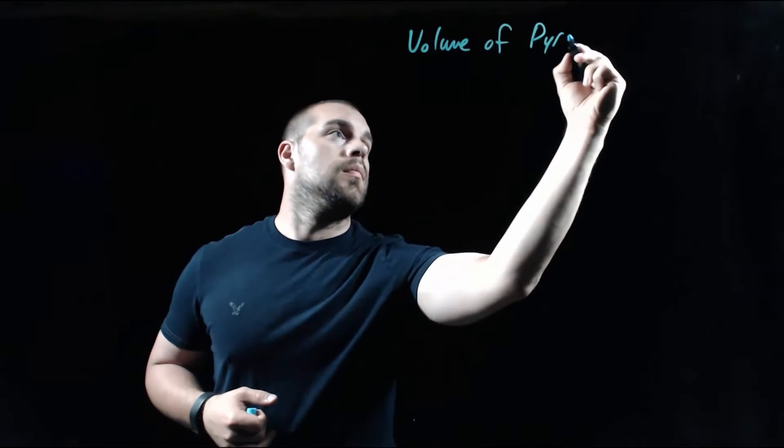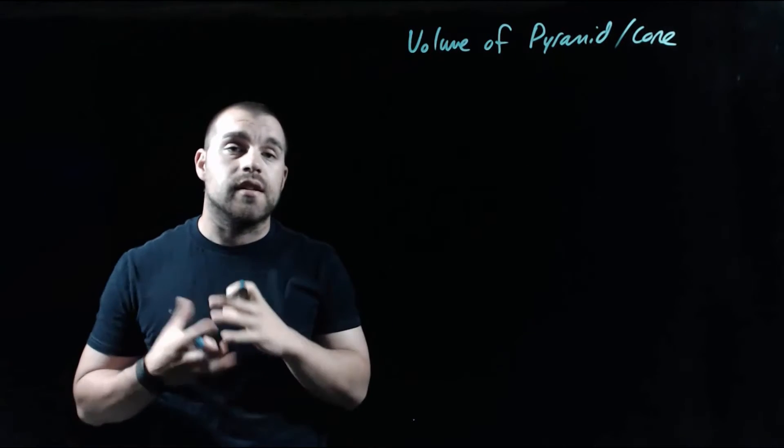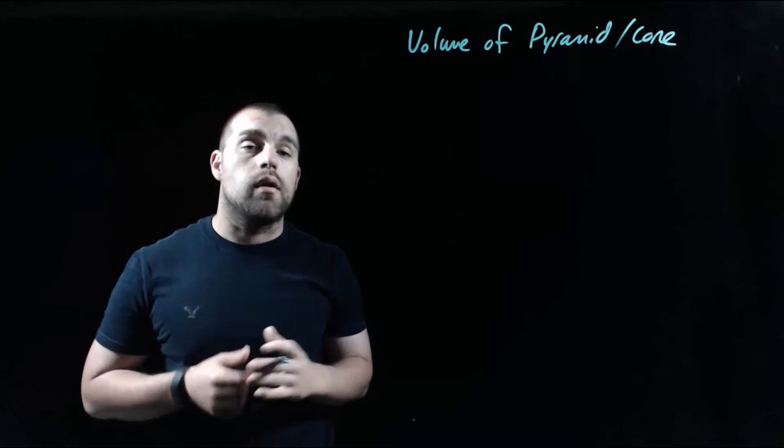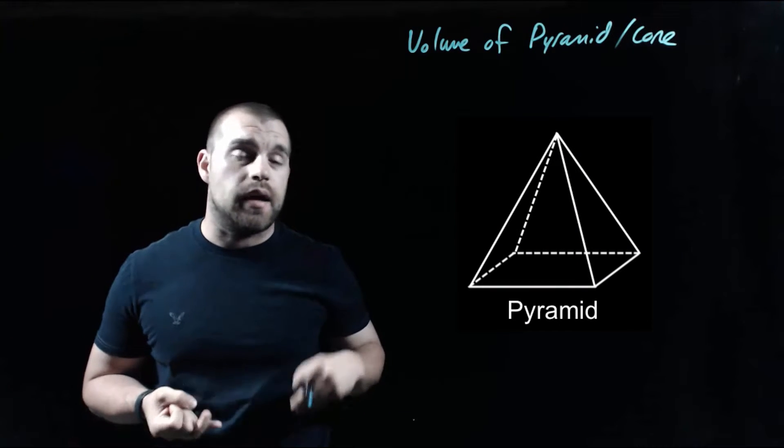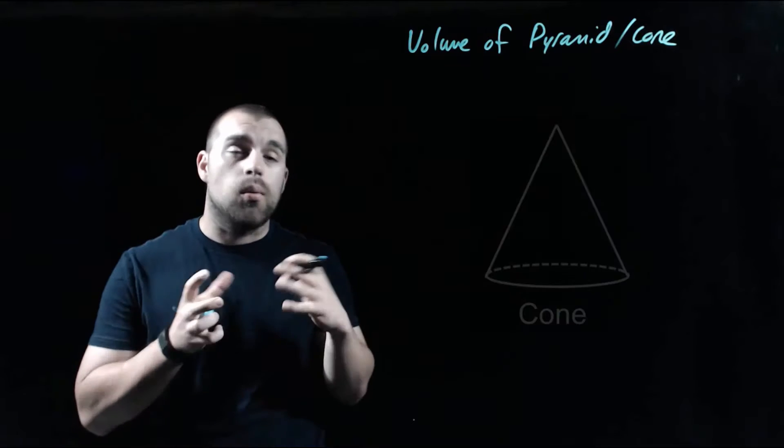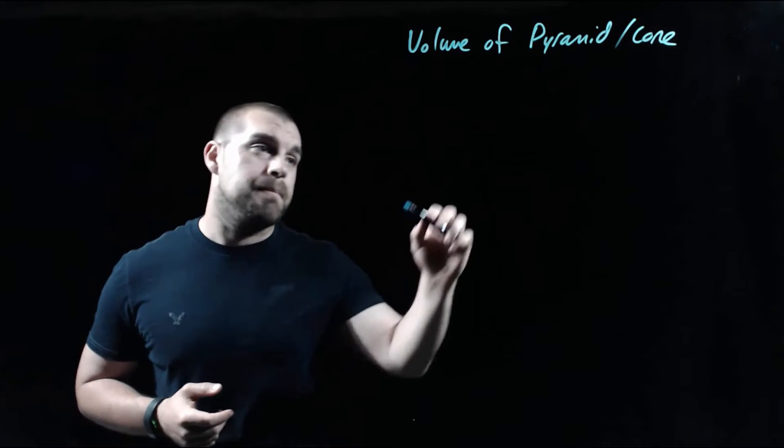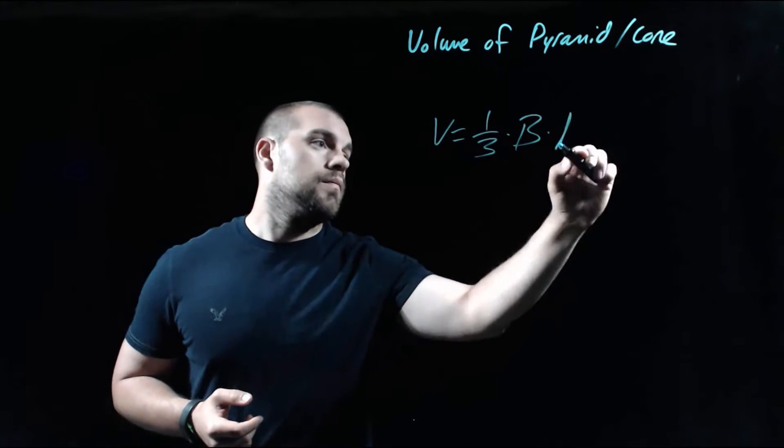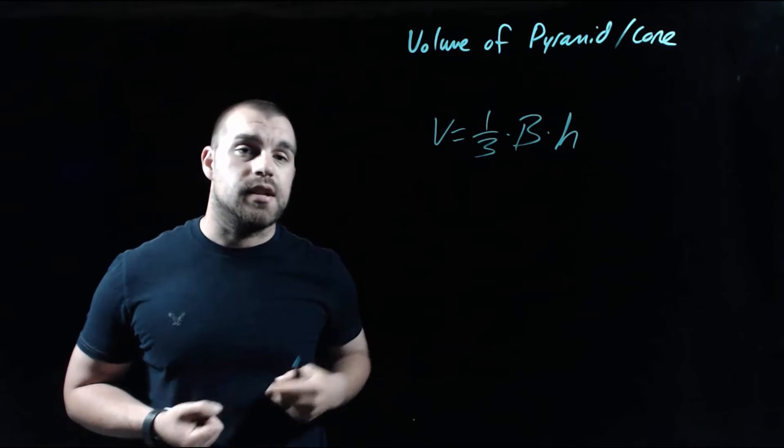As we're looking at finding the volume of either a pyramid or a cone, because the shapes are so similar they do have the same exact formula in order to find their volume. Whether we're dealing with a base that's some sort of polygon—a triangle, a square, a regular polygon—or whether that base is a circle in the case of a cone, the volume formula is going to be exactly the same. We take one third times the area of the base times the height.